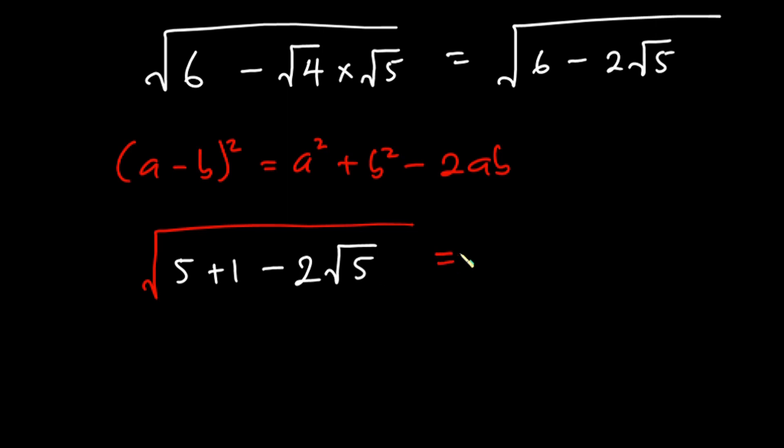We can also write this as square root of 5 squared, or square root of 5 squared. And 1 could also be written as 1 squared. Then we have minus 2 square root of 5.